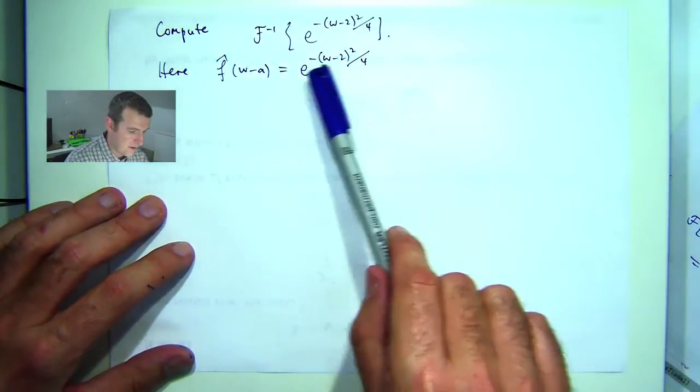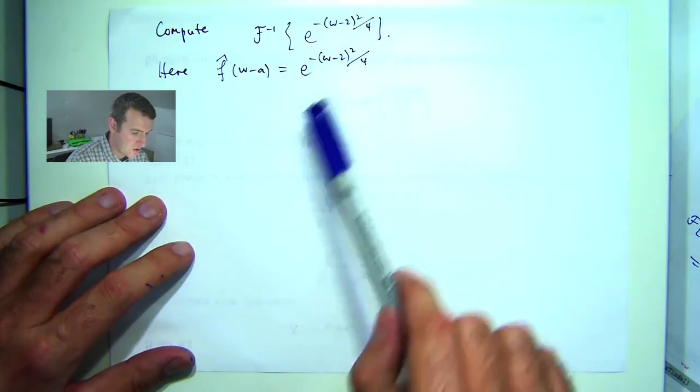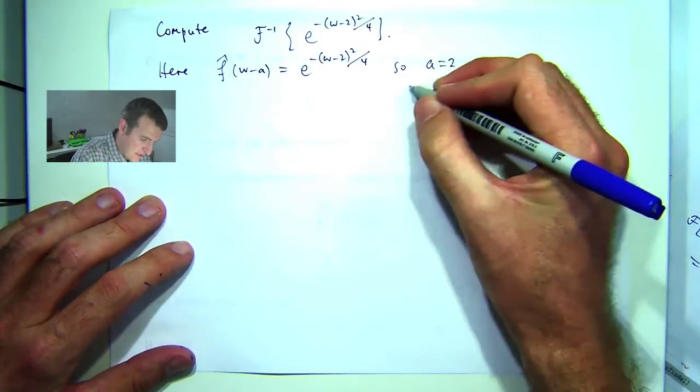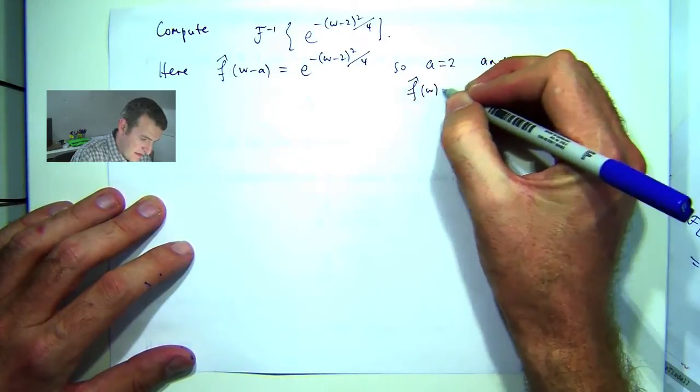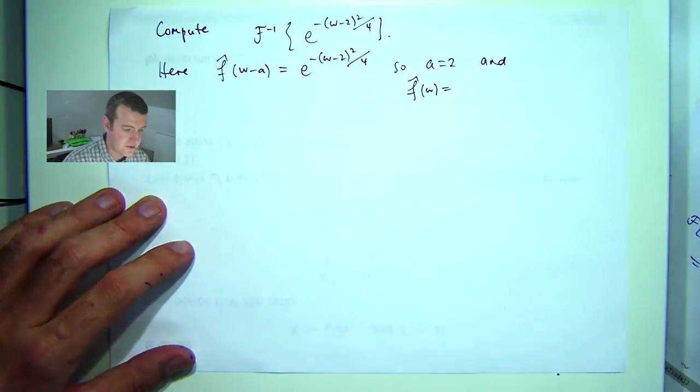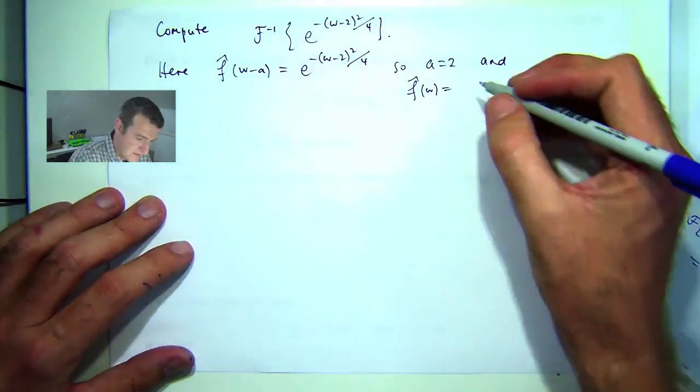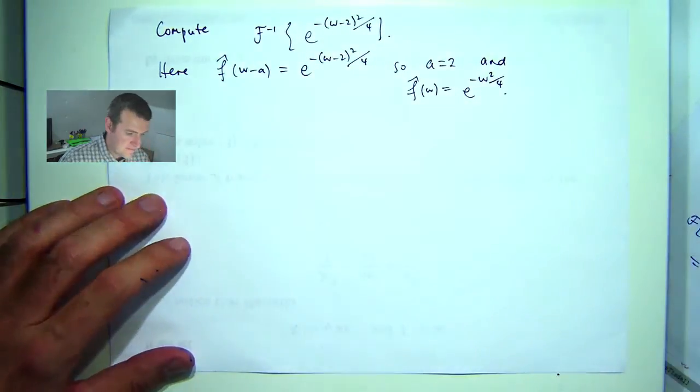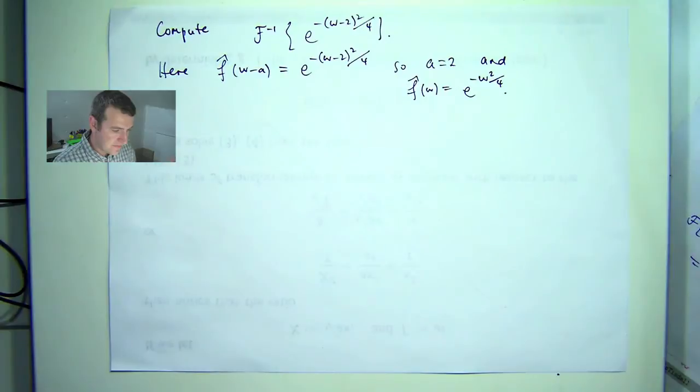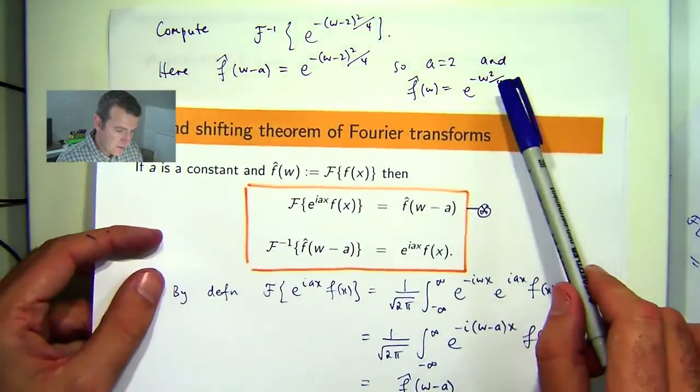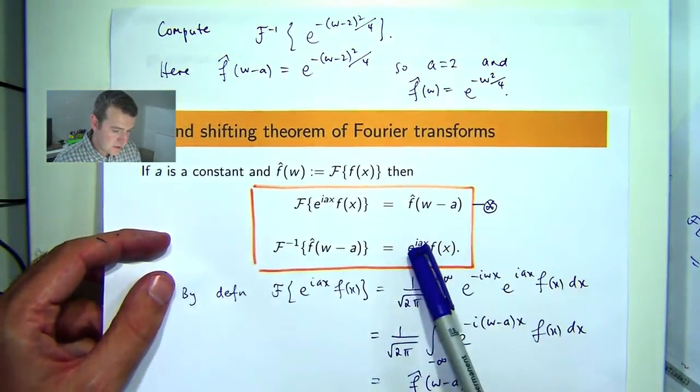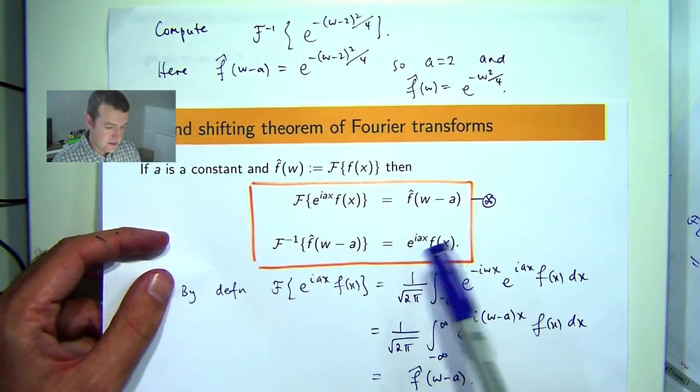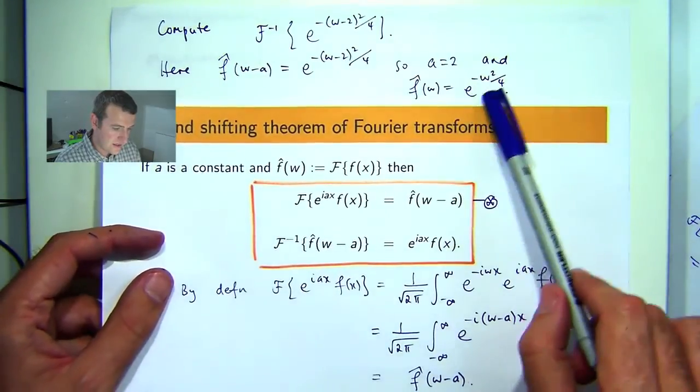So what would a be and what would f hat be? Well, a would be 2 and f hat of w is basically just replace the w minus 2 in brackets with w. So to apply the second shifting theorem, we want to take the inverse transform of that and then multiply through by this exponential function with a equals 2. So the question is what is the inverse transform of this?